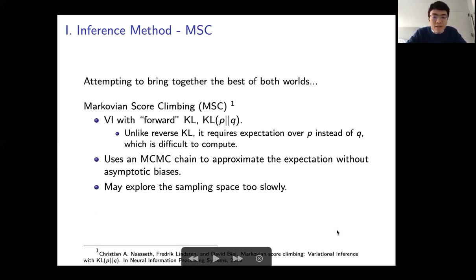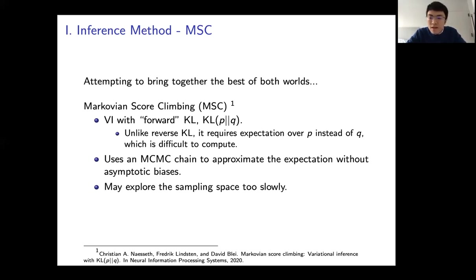A method that attempts to bring together the best of both worlds is the recently proposed Markovian Score Climbing. It is VI but uses the forward KL divergence as its objective. An advantage is that it can often find the posterior distribution without asymptotic biases. The challenge is that evaluating the forward KL requires computing an expectation over P rather than Q, which is difficult since P is unknown. It uses an MCMC chain to sample this expectation, but may explore the sampling space too slowly.